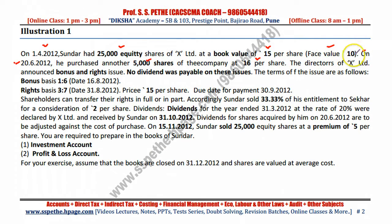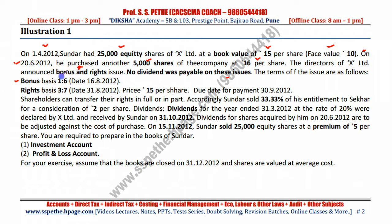Further, it is given that directors of X Limited announced bonus and right shares. No dividend was payable on these issues, meaning you will not get dividend on the bonus and right shares. The terms of the issues are as follows. Bonus basis is 1 each to 6, meaning for every 6 shares you will get 1 bonus share. The date of bonus issue is 16th August 2012.